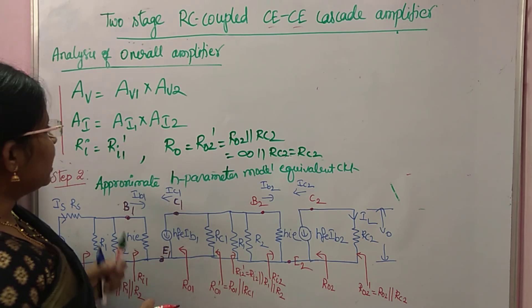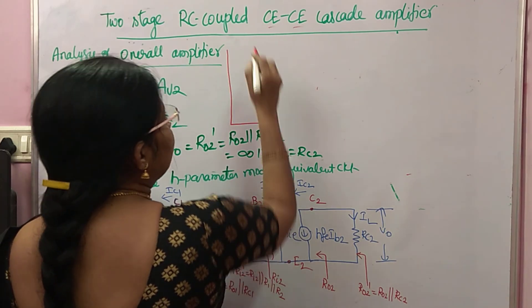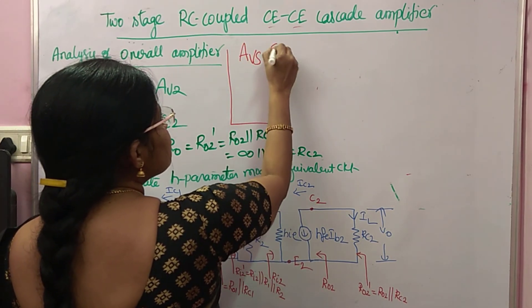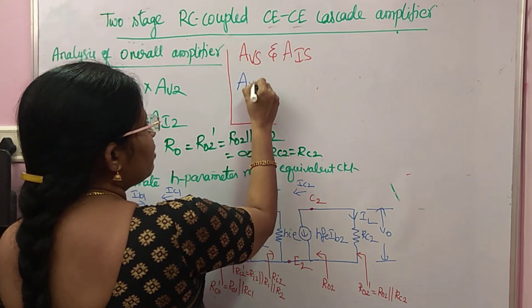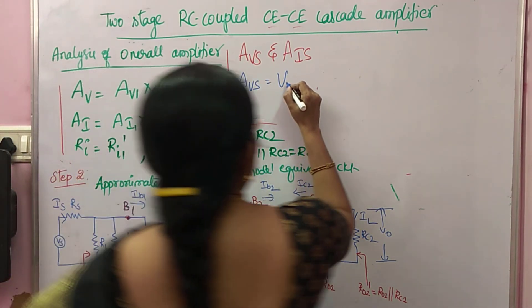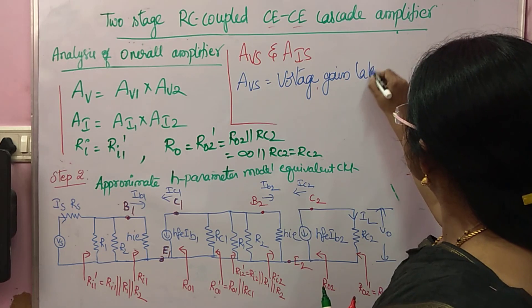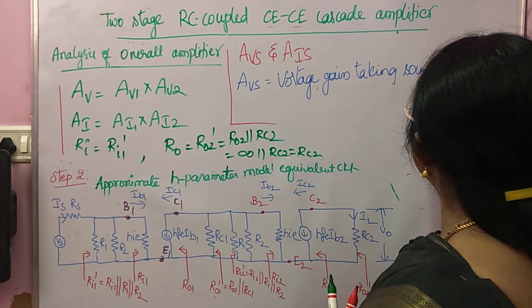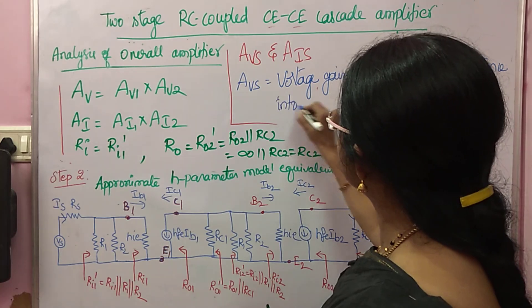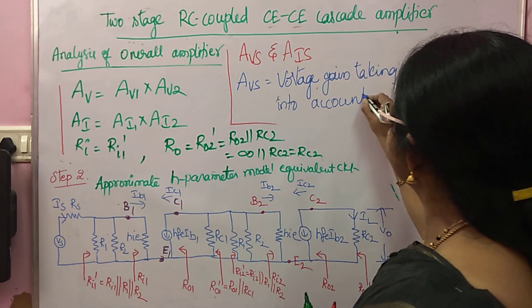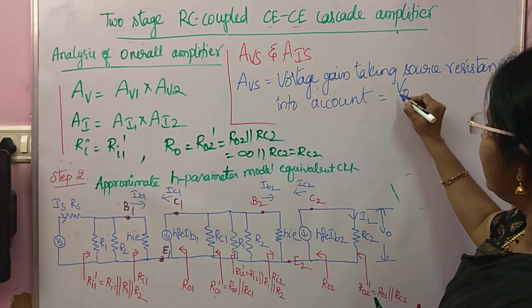Along with these four parameters we have two more: AVS and AIS. AVS is the voltage gain taking source resistance into account. AVS is nothing but V0 divided by VS.